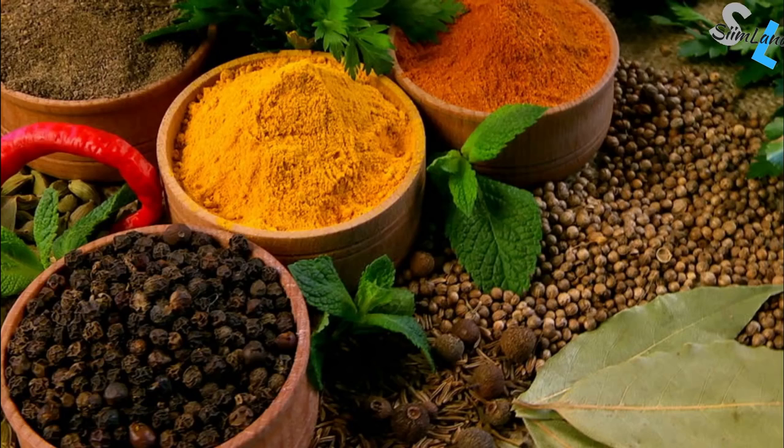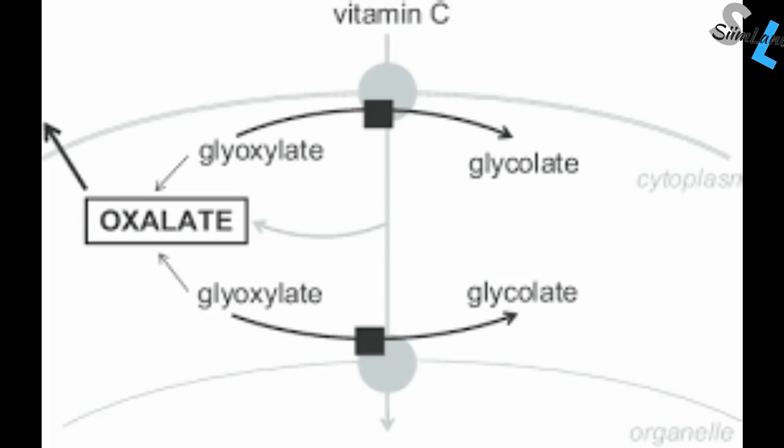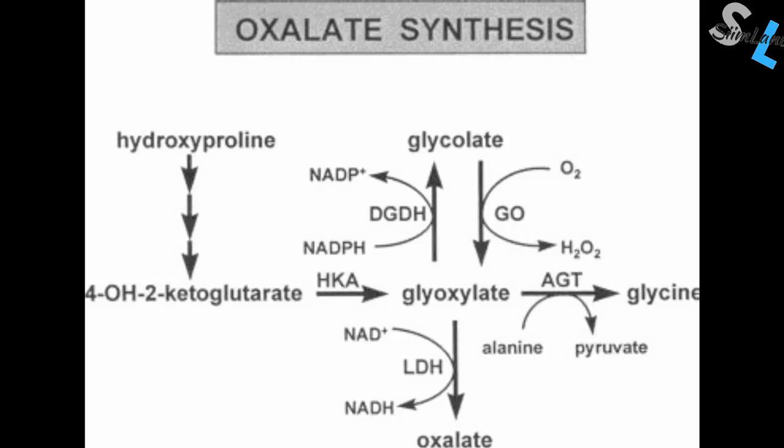Some herbs and spices like black pepper, parsley, cinnamon, and turmeric are also high in oxalates. Metabolizing vitamin C can also create oxalates, thus foods high in vitamin C can contribute to this as well. Amino acids like hydroxyproline can also be converted into oxalates, so even animal foods can contribute to your body's oxalate load.